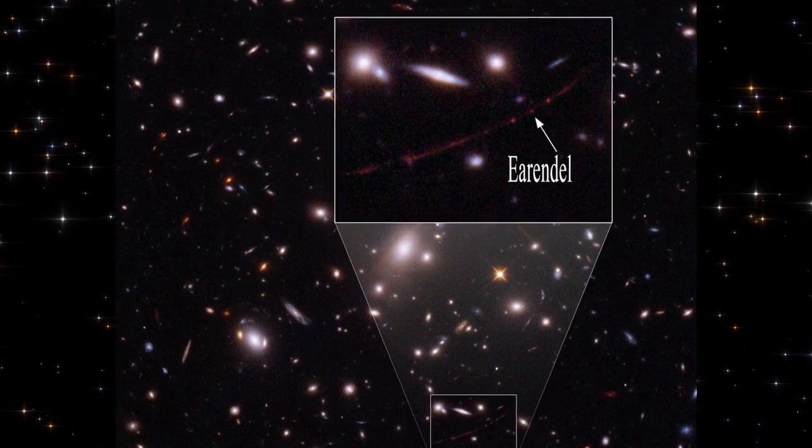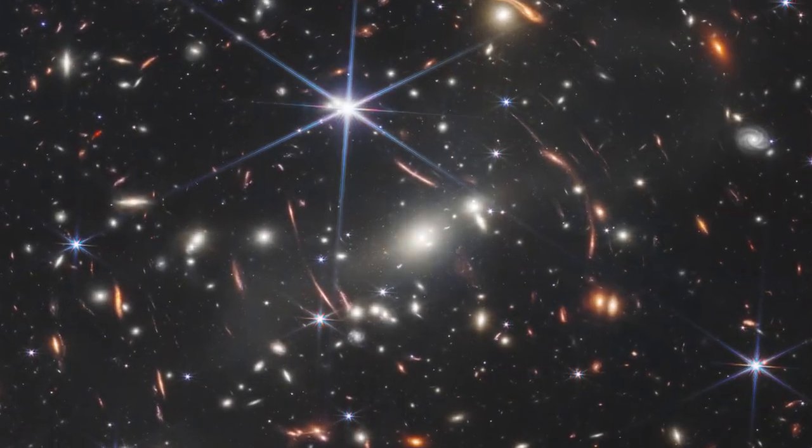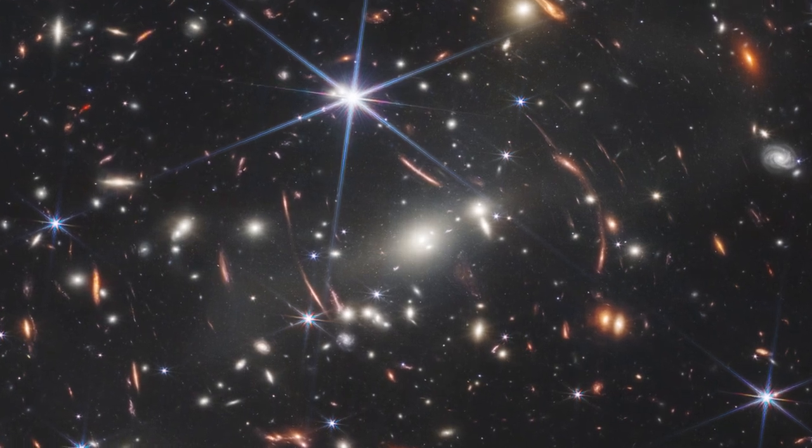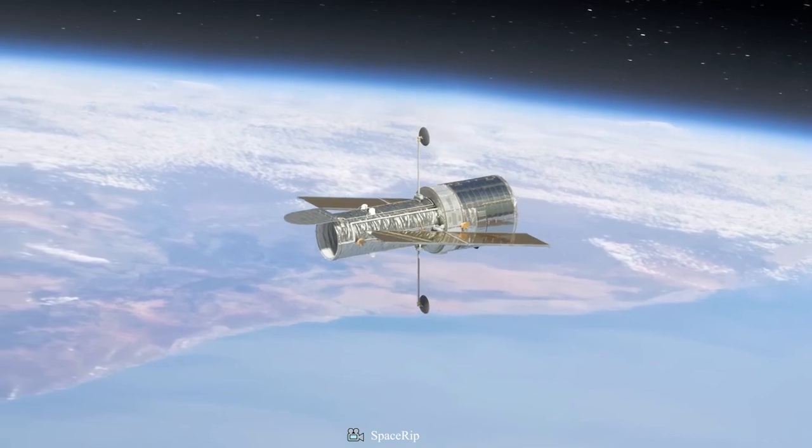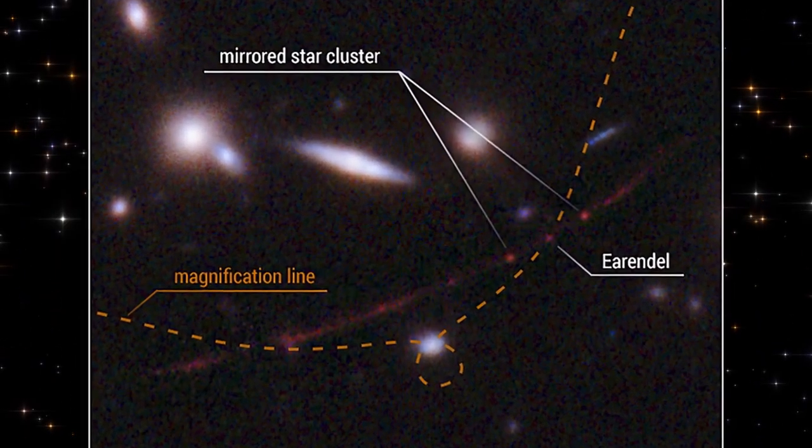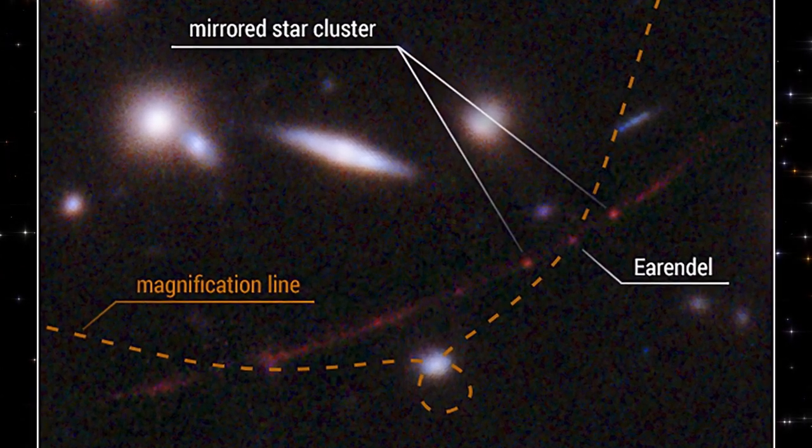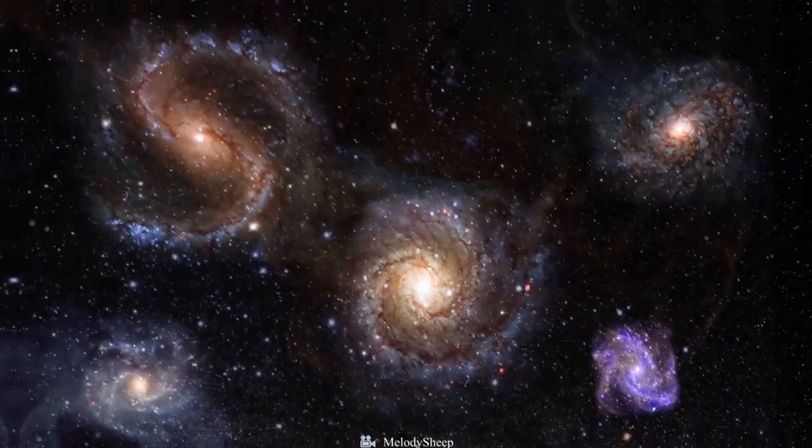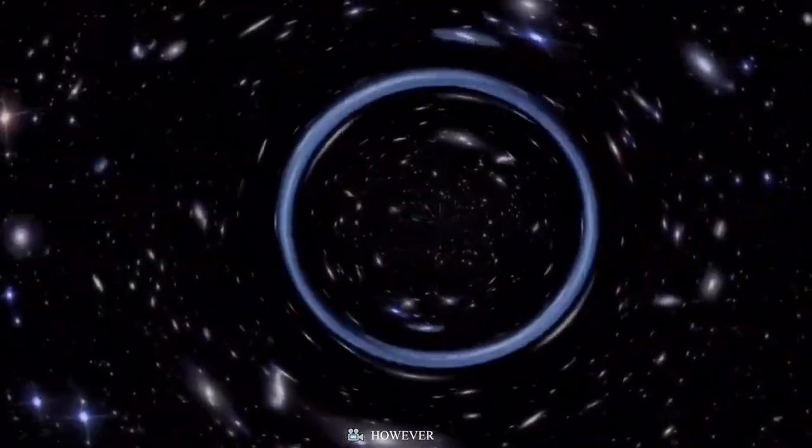Earendel is the first isolated star found at such a great distance. The smallest objects observed at these distances were star clusters embedded in distant galaxies. By utilizing the Hubble Space Telescope, an accidental discovery of this star was made. Hubble discovered the star's parent galaxy after it was gravitationally magnified by a cluster located in the image's foreground. Massive astronomical objects such as galaxy clusters distort the space-time fabric surrounding them.